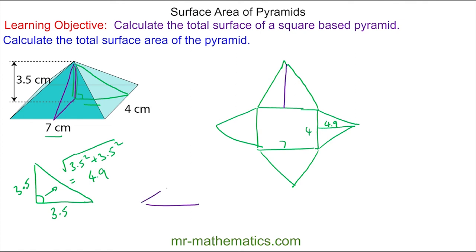So now for the triangles on the other pair of faces, the height is again 3.5 but this base length is half of four, which is two. So again we can use Pythagoras's theorem: 3.5 squared plus 2 squared, which gives approximately 4 centimeters, and that is that length here.